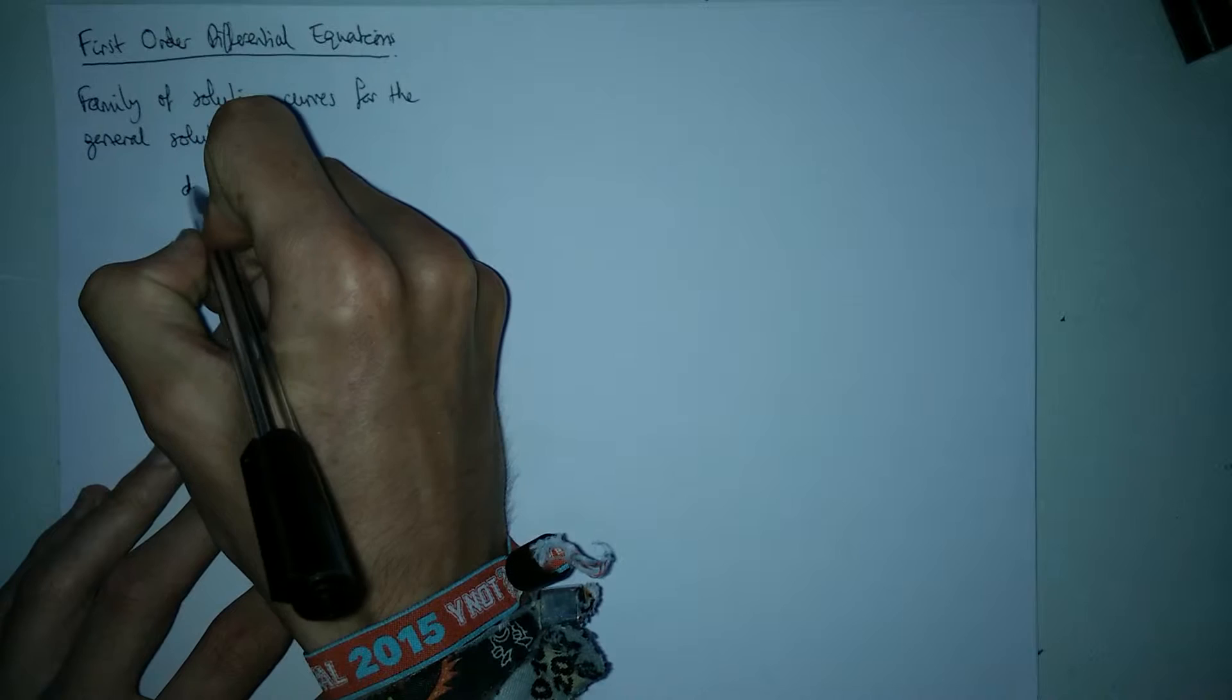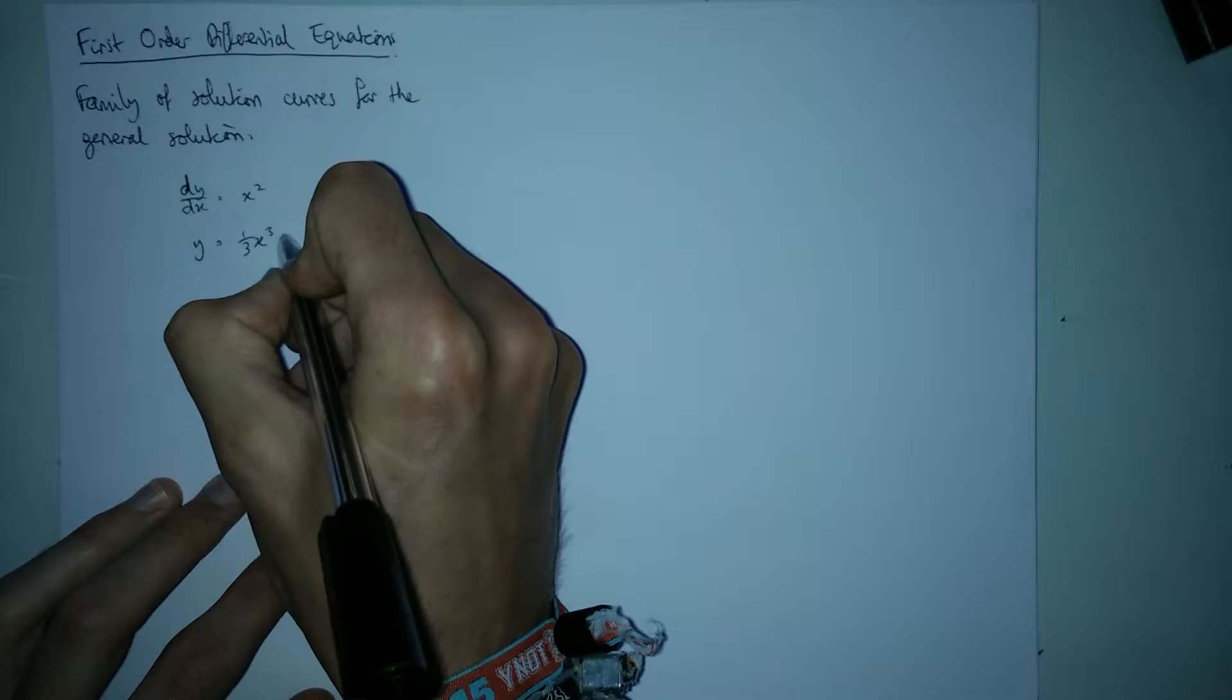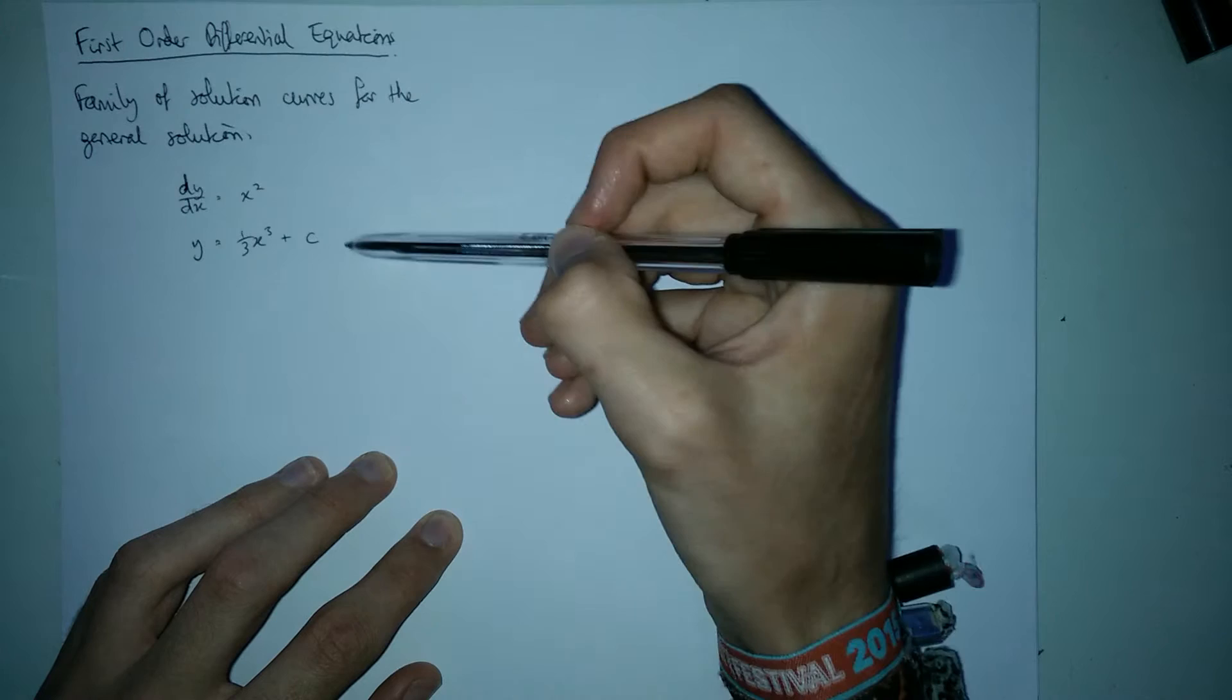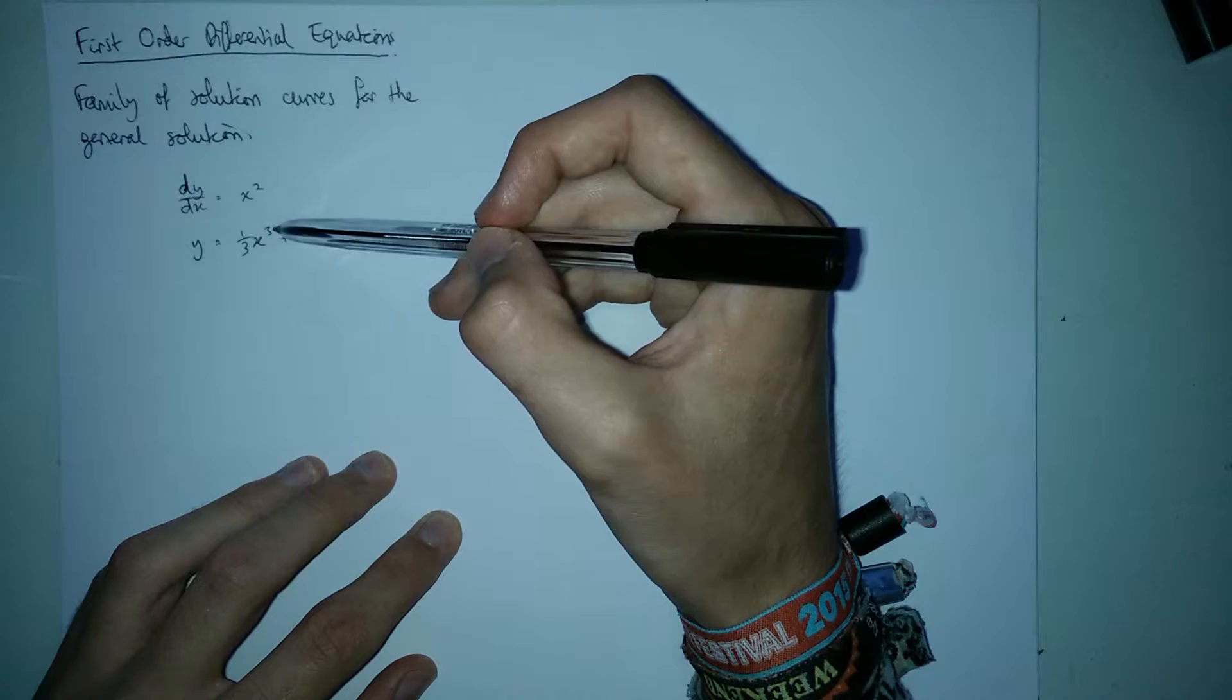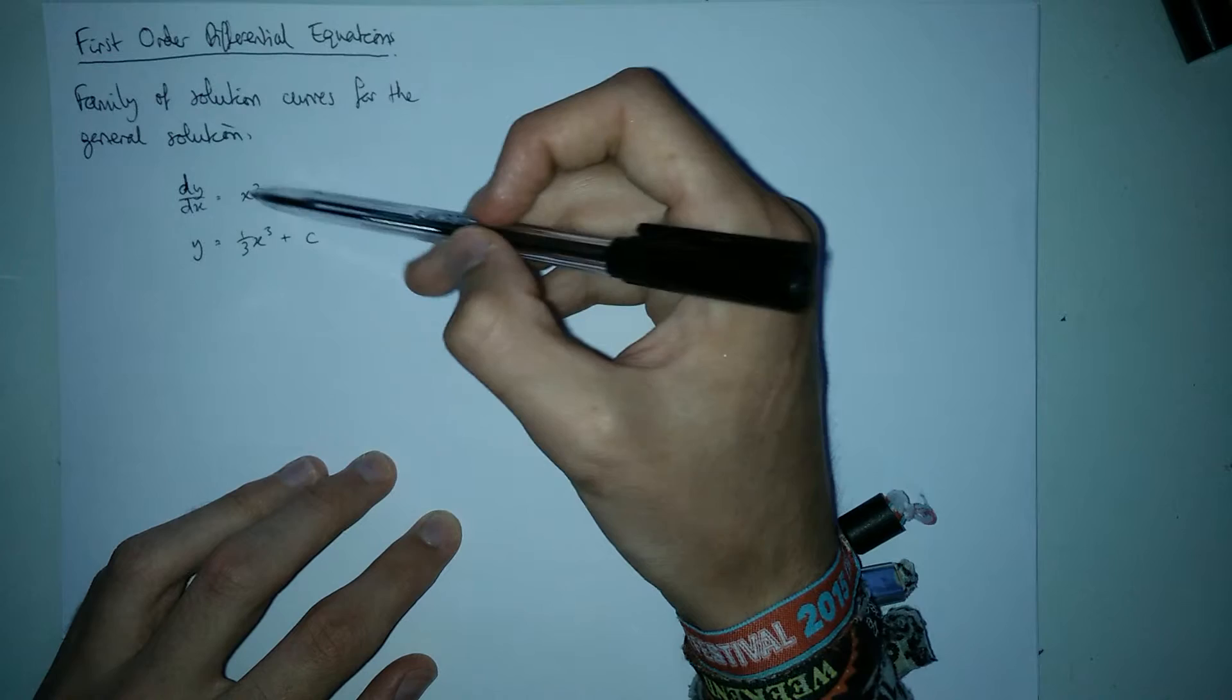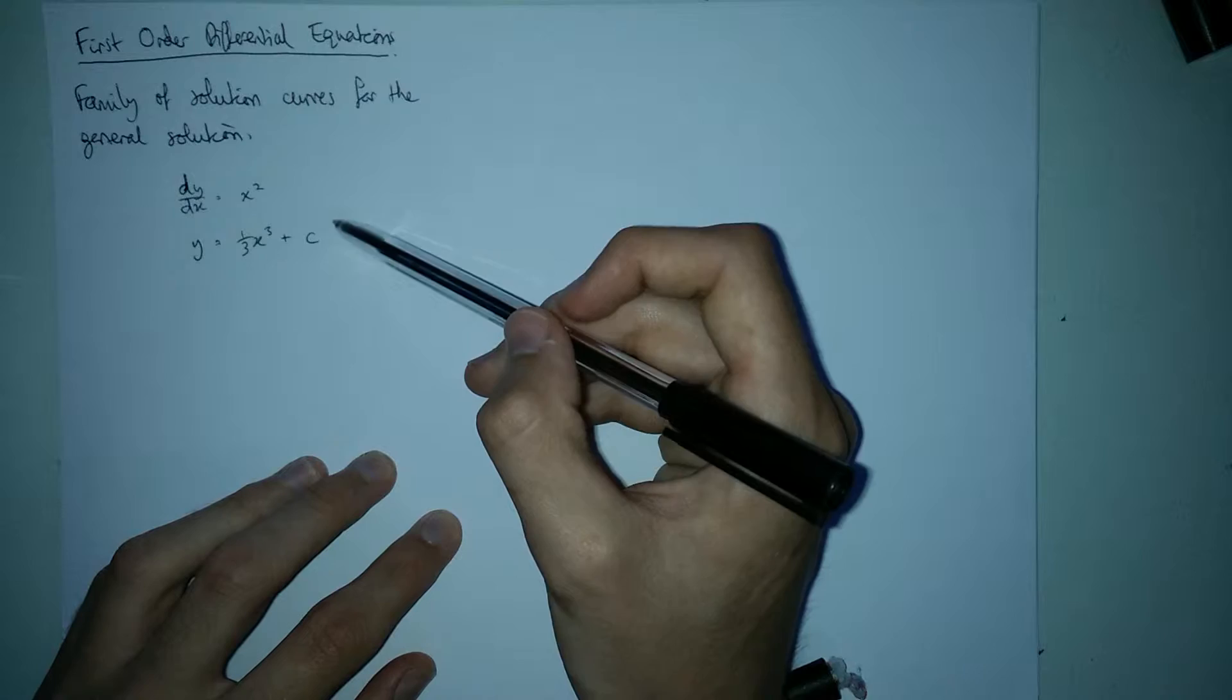So in the last video we looked at this first order differential equation and we found this solution. Now this is called a general solution for this differential equation. It's called general because we don't know the value of c. C could take any value we like and that would still work in the equation. So there's in fact an infinite number of solutions. So this is not a specific or particular solution, this is a general solution, and that means we have a lot of different possible curves.